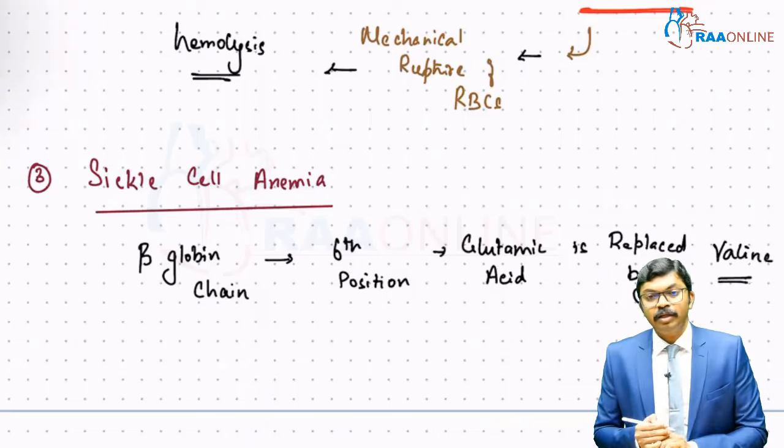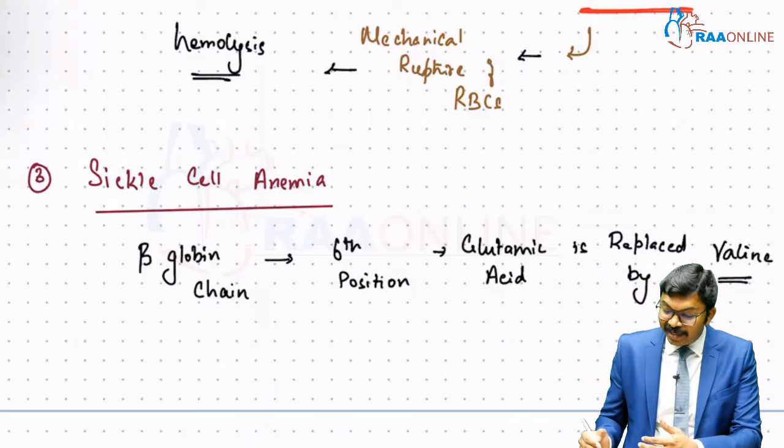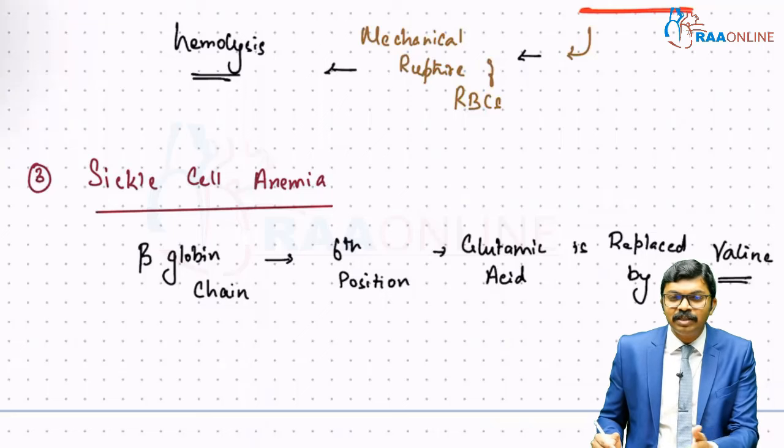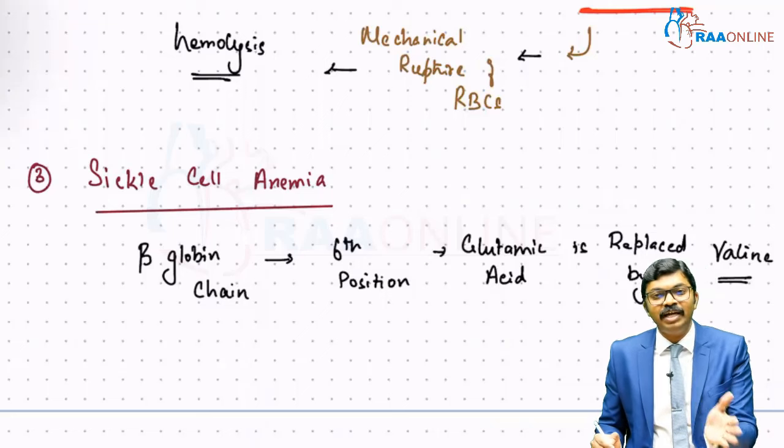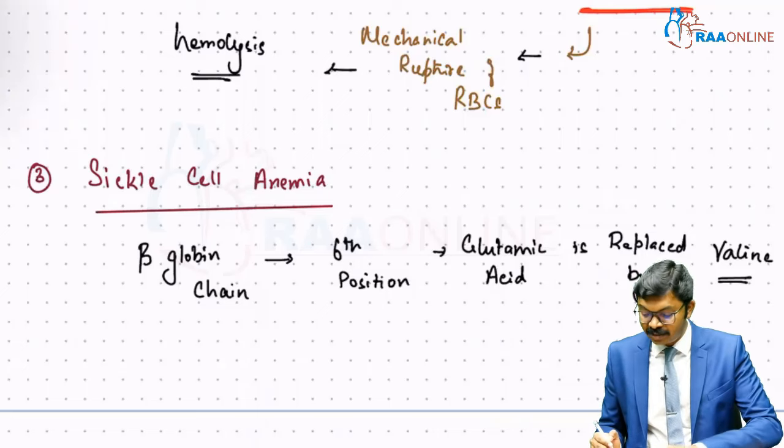I repeat, the original amino acid that should be there is glutamic acid, which gets replaced by valine. Valine is the villain here—V for V, valine is the villain. So glutamic acid is thrown away and valine comes and sits in that spot.